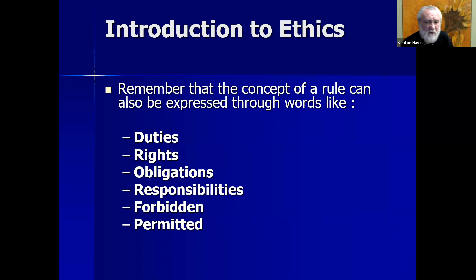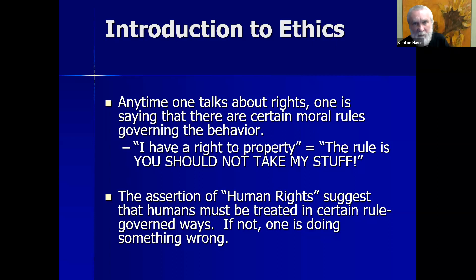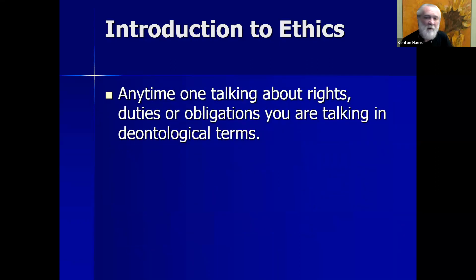The concept of a moral rule can be expressed through other words: duty, rights, obligations, responsibilities, what is forbidden, what is permitted. Any time one talks about rights, one is saying there are certain moral rules governing the behavior. If I said I have a right to property, that's another way of saying the rule is you should not take my stuff. The assertion that there are universal human rights suggests that humans must be treated in certain rule-governed ways. Any time one's talking about rights, duties, or obligations, one's talking in deontological terms.